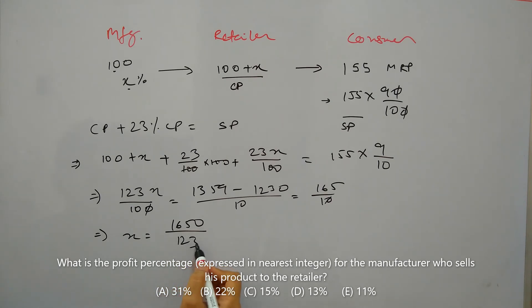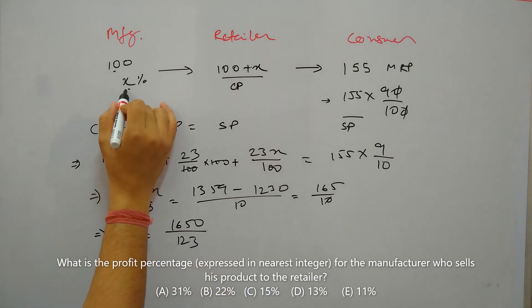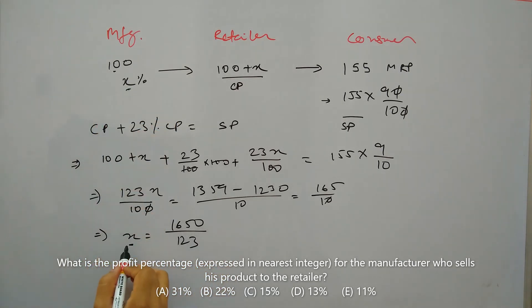If 123 times 10 is 1230, then 1650 divided by 123 will give something in fraction. But we need to find the value of X, which is the profit of manufacturer, rounded to the nearest integer. So it will come to roughly 13 point something.